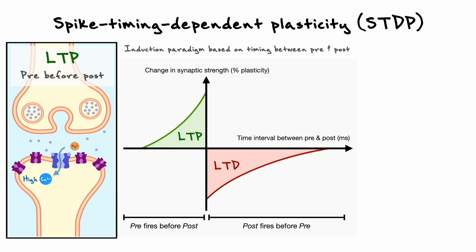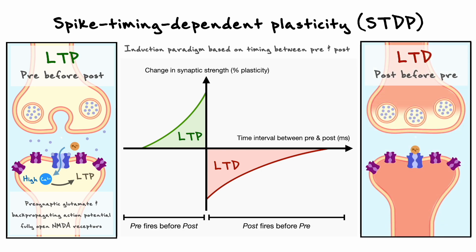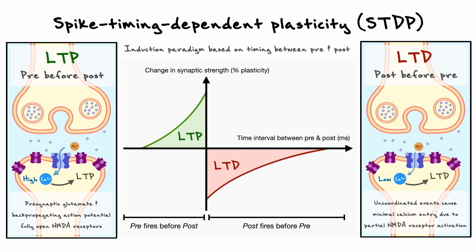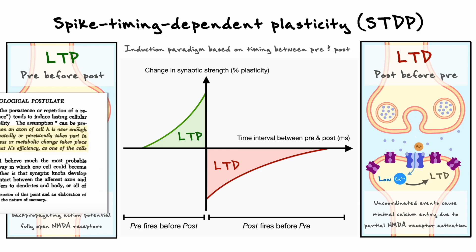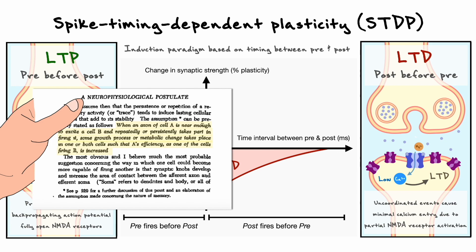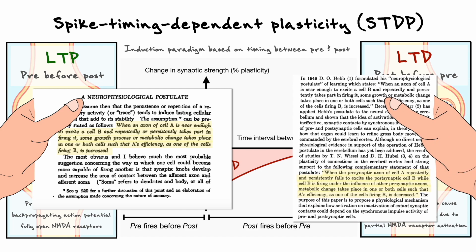Hence, when the activity is pre-before-post, the NMDA receptors can fully open, let calcium enter the cell, and eventually lead to LTP. In the LTD scenario, because the glutamate arrives after the backpropagating depolarization, only a small amount of calcium can enter the cell, which leads to long-term depression by the same mechanisms we have discussed. You will notice that STDP follows the general principle of Hebb's postulate: if the presynaptic cell contributes to the firing of the postsynaptic cell, the connection will be strengthened by LTP. The formal extension to Hebb's postulate came from Stent, which basically said that synaptic efficacy between pre- and postsynaptic cells will be decreased by LTD if the presynaptic cell fails to contribute to the firing of the postsynaptic cell.